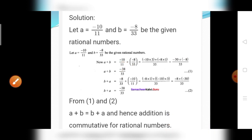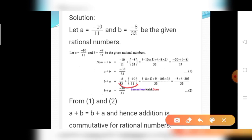Now find B plus A. B value minus 8 divided by 33 plus A value minus 10 divided by 11. Denominators are different; take LCM, which is also 33. The first number minus 8 divided by 33 — LCM is same, no changes. The second number minus 10 divided by 11: numerator multiplies by 3 giving 30, denominator multiplies by 3 giving 33. The answer equals minus 8 plus minus 30 divided by 33 — both same sign, add — giving minus 38 divided by 33. So B plus A also equals minus 38 divided by 33.